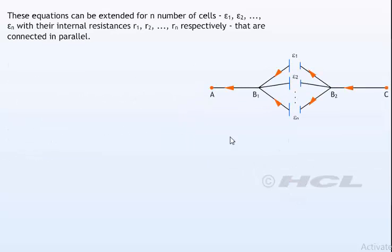These equations can be extended for N number of cells E1, E2 till EN with their internal resistances R1, R2, and so on till Rn respectively that are connected in parallel. They can be generalized as 1 upon R equivalent equals 1 upon R1 plus till 1 upon Rn. E equivalent upon R equivalent equals E1 upon R1 plus till EN upon Rn.